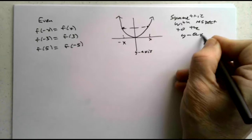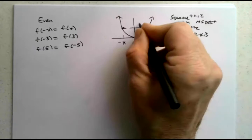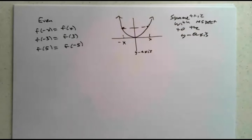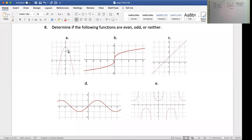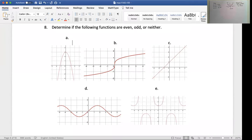So in terms of symmetries, an even function is symmetric with respect to the y-axis. That means the y-axis acts as a mirror — you have a mirror image on either side of the y-axis. Let's go back and look at these functions and see if any of them are symmetric with respect to the y-axis. Does this one have a mirror image on that side? I think so. Mirror image on that side? Yes. Mirror image on that side? Yes. So it looks like this one is even.